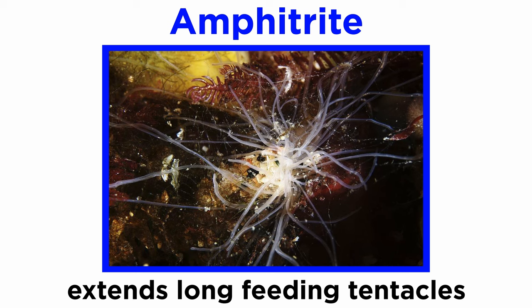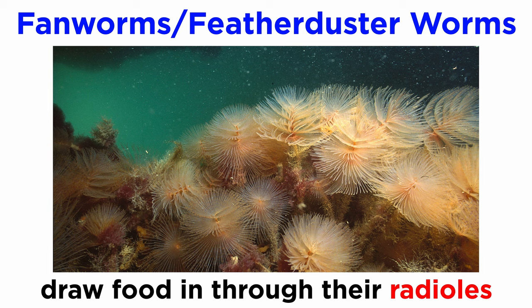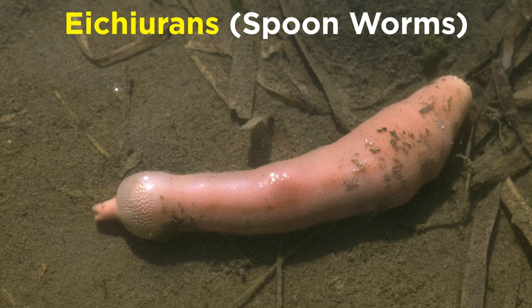Other sedentary tube worms are particle feeders that use cilia or mucus to trap planktonic food particles. Some, like Amphitrite, protrude their heads and extend long feeding tentacles to find food. Others, like the lugworms, force water to flow through their burrows. Still others, like the fanworms or feather duster worms, are common in shallow tropical waters and feed by drawing food through their feathery-looking radioles. Still others, like the bone-eating zombie worms of genus Osedax, burrow into whale bones to feed on enclosed fats.